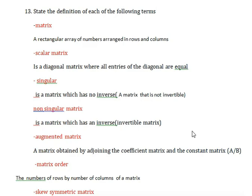We are going to state the definition of each of the following terms. Matrix means a rectangular array of numbers arranged in rows and columns.